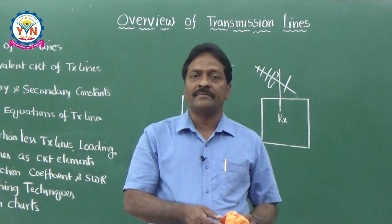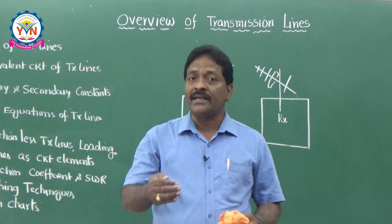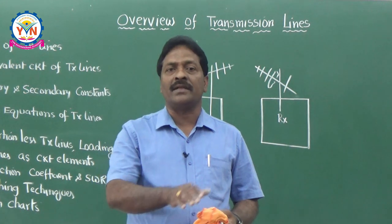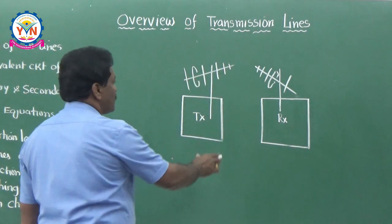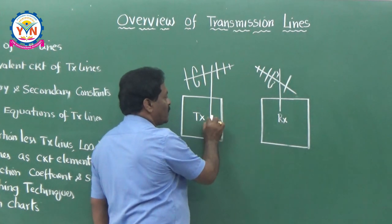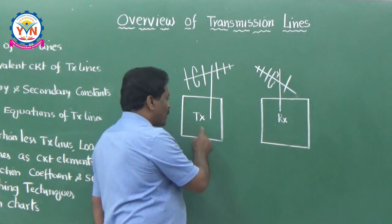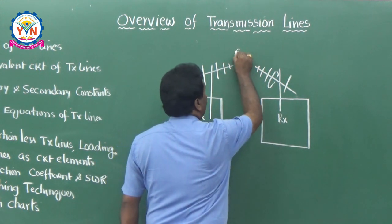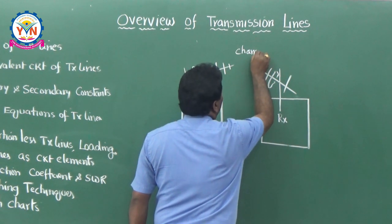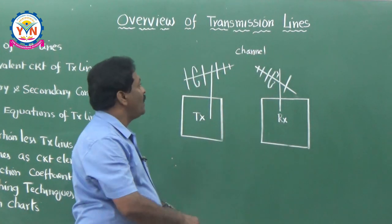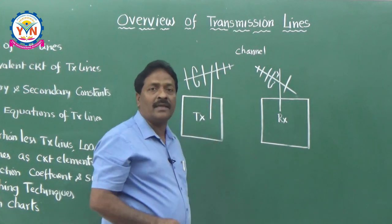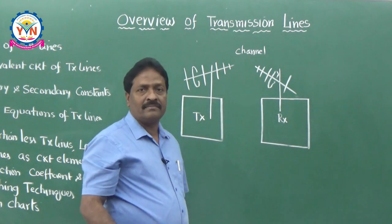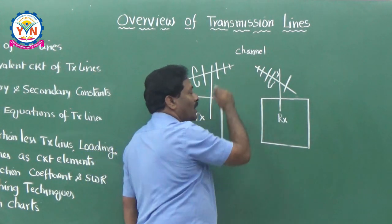What is a transmission line? A transmission line is nothing but a conductive method of guiding the electrical energy from one place to the other. If you want to establish communication between two points, you require a transmitter and receiver, and between them one channel is also required. This channel may be wired or wireless. In wave propagation, you might have seen wireless communication because you used the concept of electromagnetic waves.